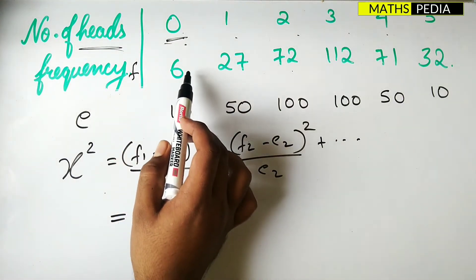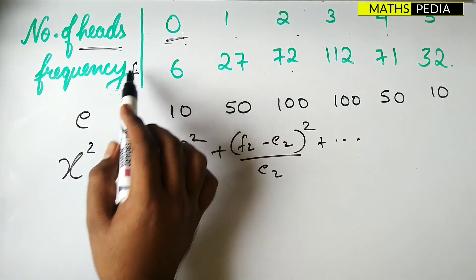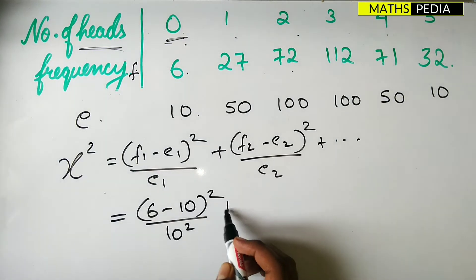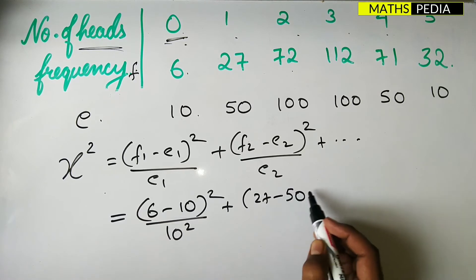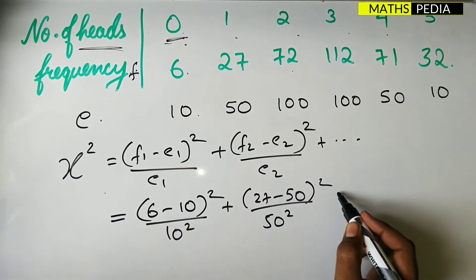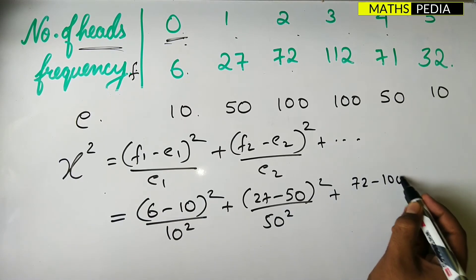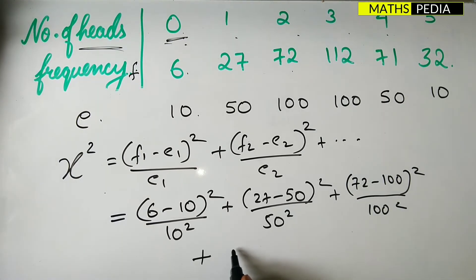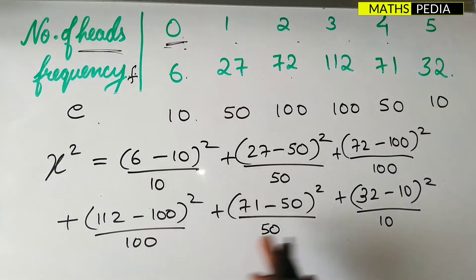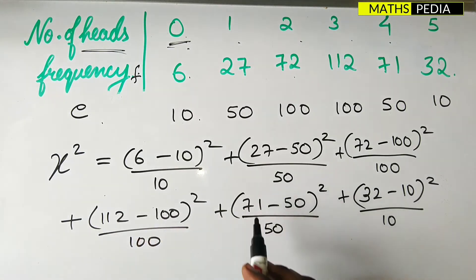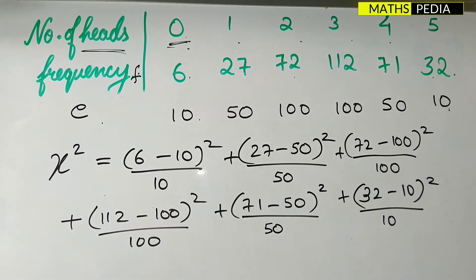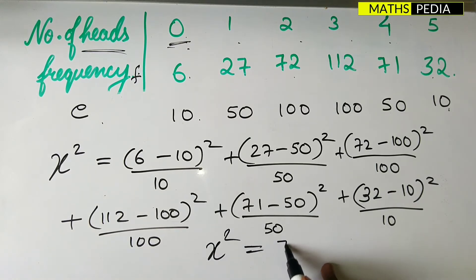Substituting the values: (6-10)^2/10 + (27-50)^2/50 + (72-100)^2/100, and so on for all pairs, with the last term being (32-10)^2/10. After simplifying all the terms, the calculated chi-square value comes out to 78.68.